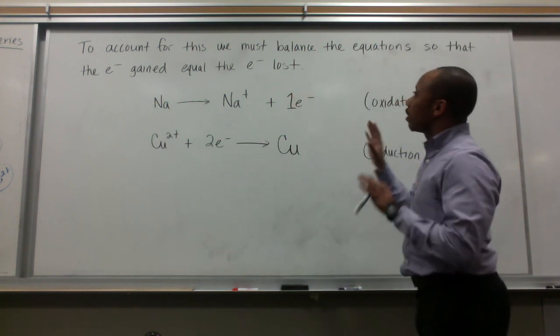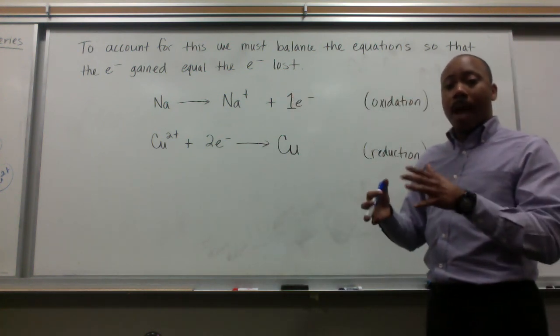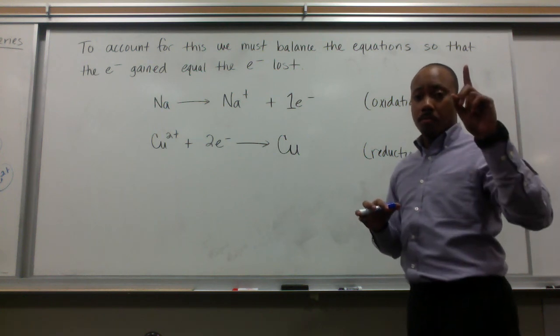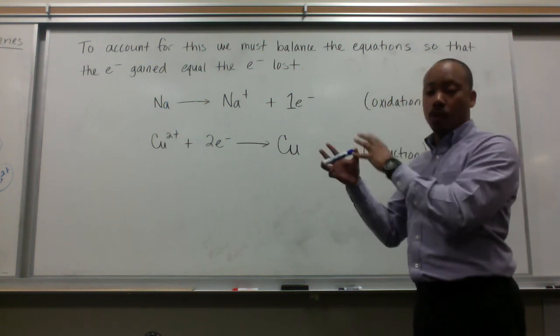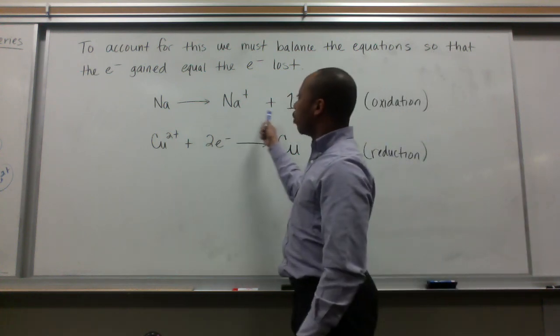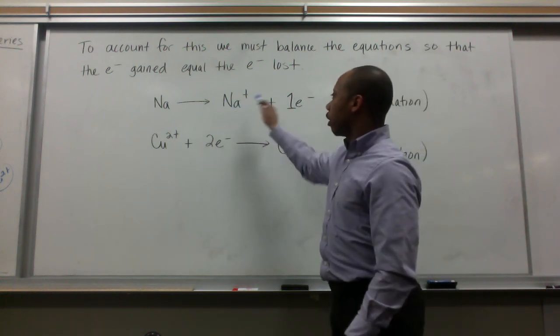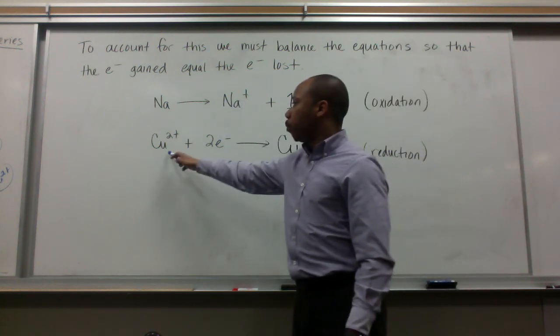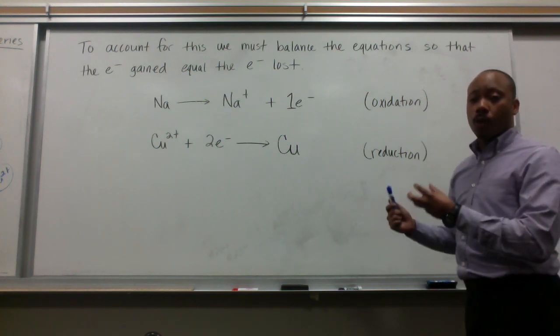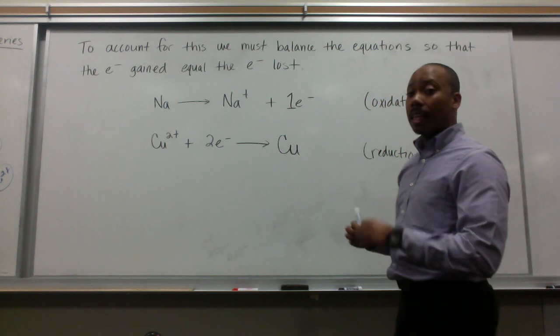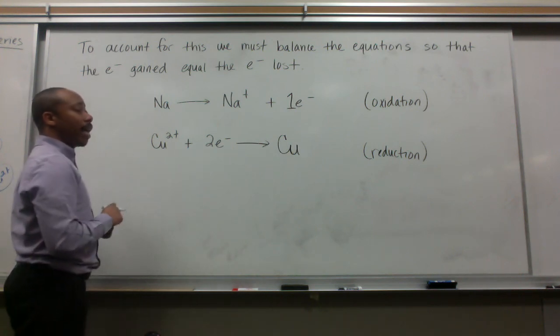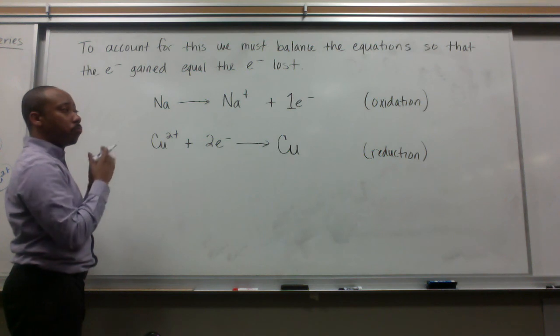To account for this, we must balance the equation so that the electrons gained match the electrons lost. Sodium metal gave one electron to the copper 2 plus ions, but it took two sodium atoms, and they gave one apiece. We have to balance the electrons. This is electrochemistry, so we're dealing with electrons. We do that by multiplying the entire equation by two.